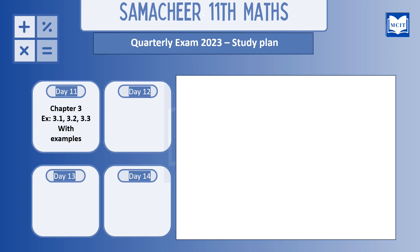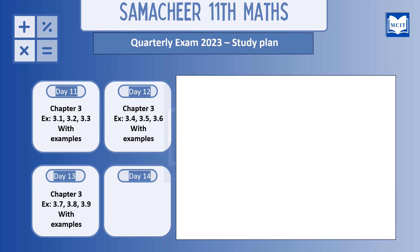Day 11: Chapter 3, exercise 3.1, 3.2, and 3.3 with examples. Day 12: Chapter 3, exercise 3.4, 3.5, and 3.6 with examples. Day 13: Chapter 3, exercise 3.7, 3.8, and 3.9 with examples. Day 14: Chapter 3, exercise 3.10, 3.11, and 3.12 with examples.